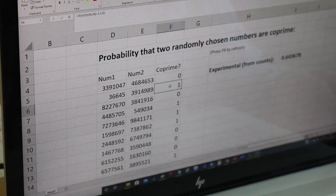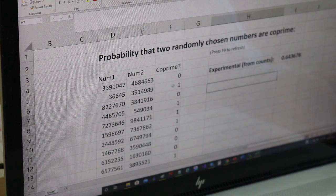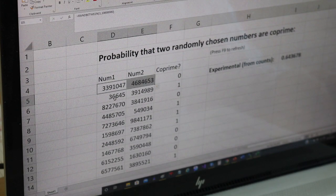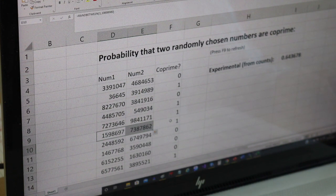So I've actually built an Excel demo for this. What it's doing is it's generating a pair of random numbers each time, I think between one and ten million, and what it does is it says if they're coprime or not.